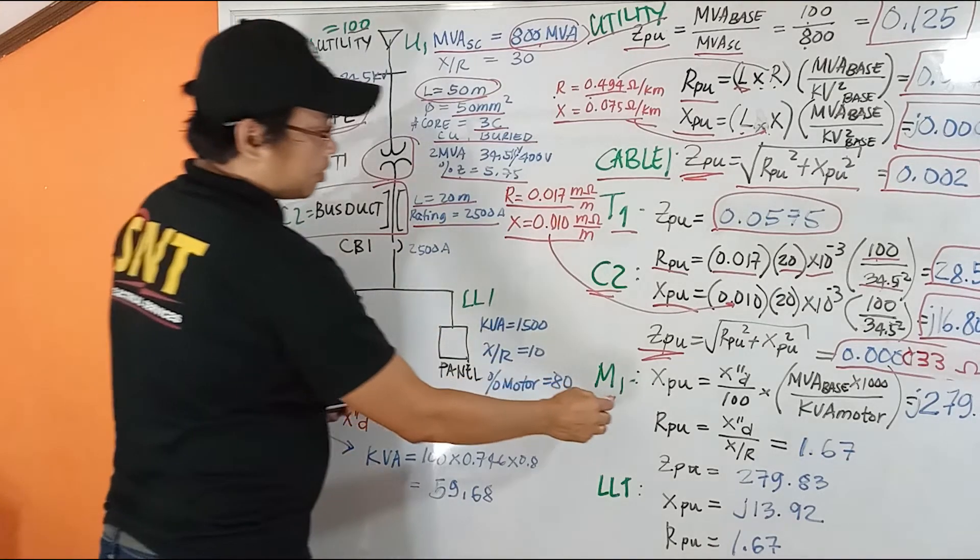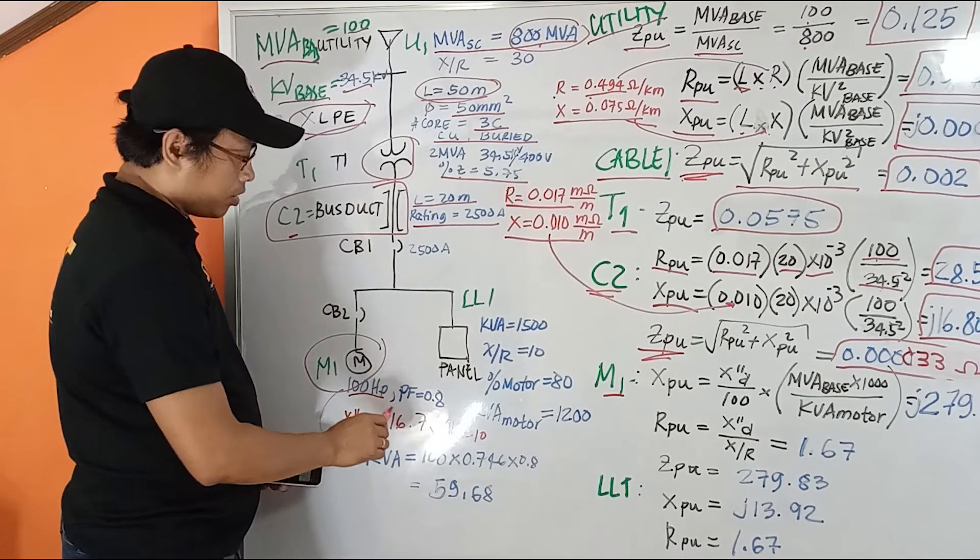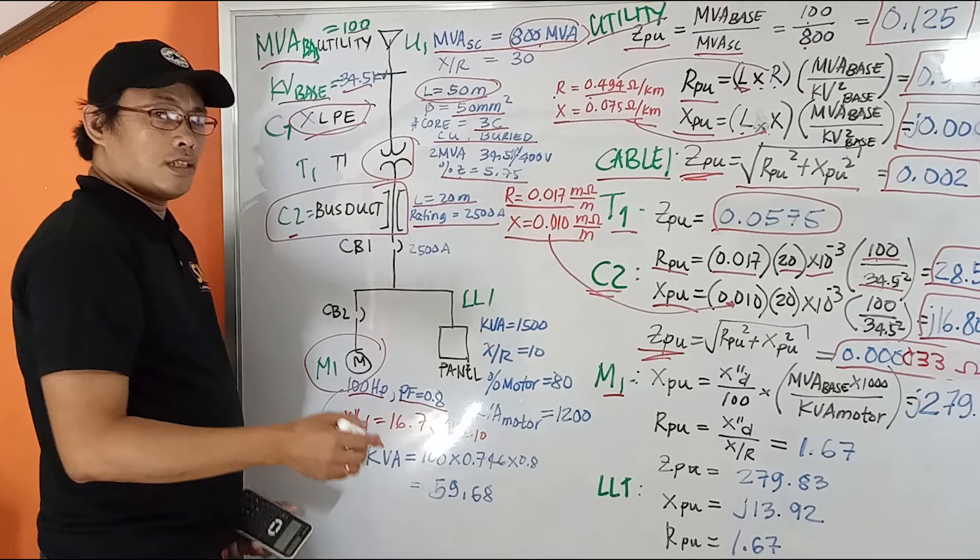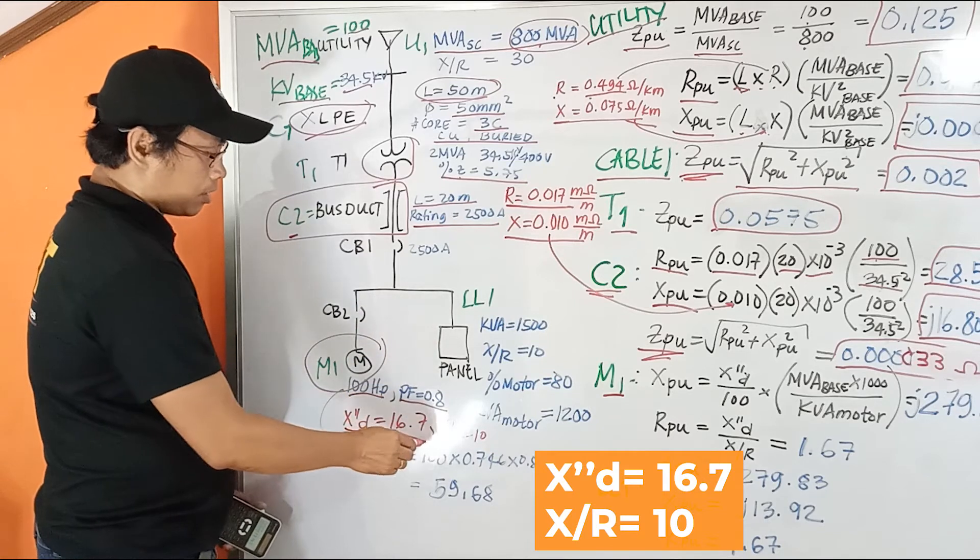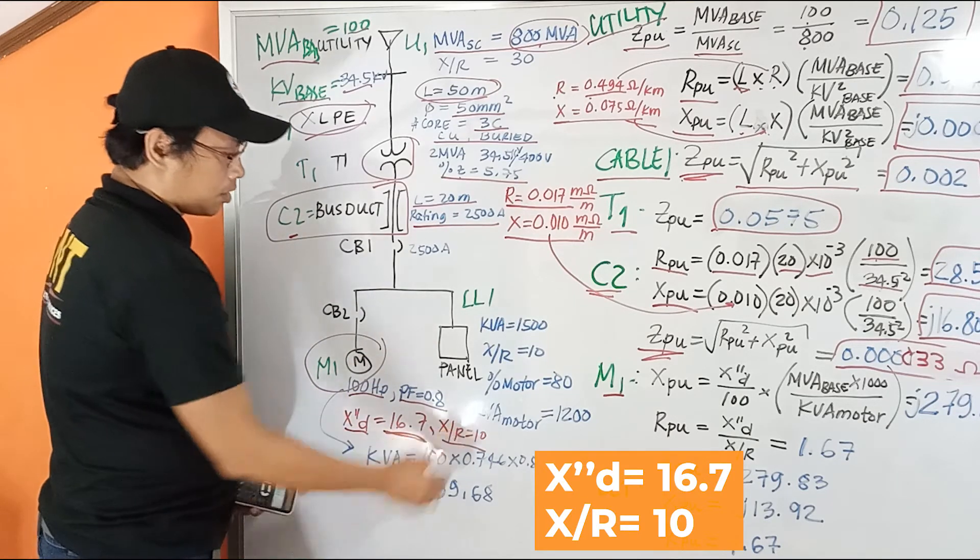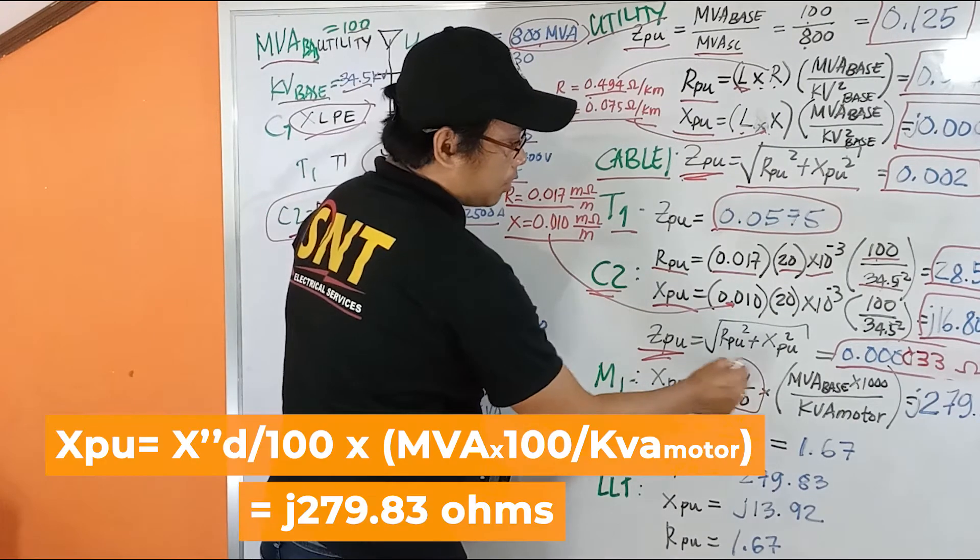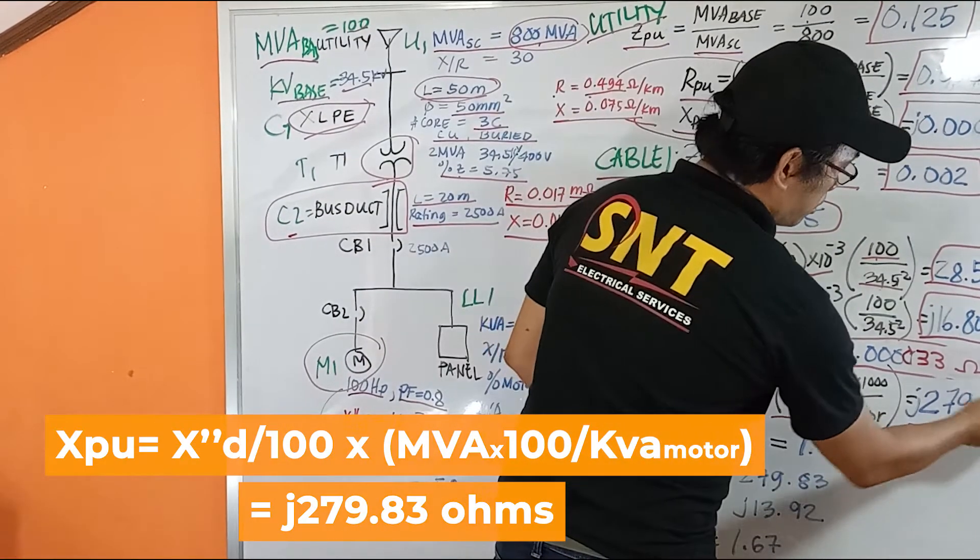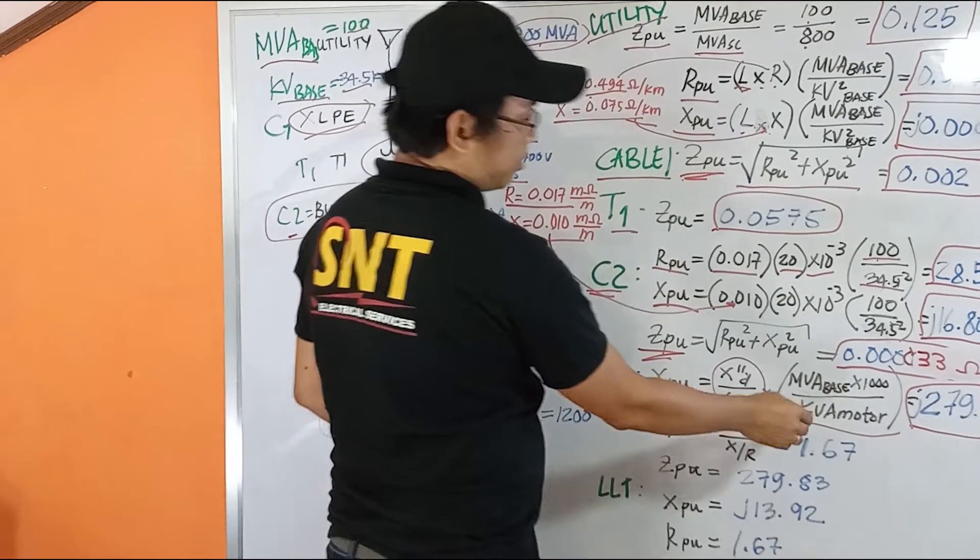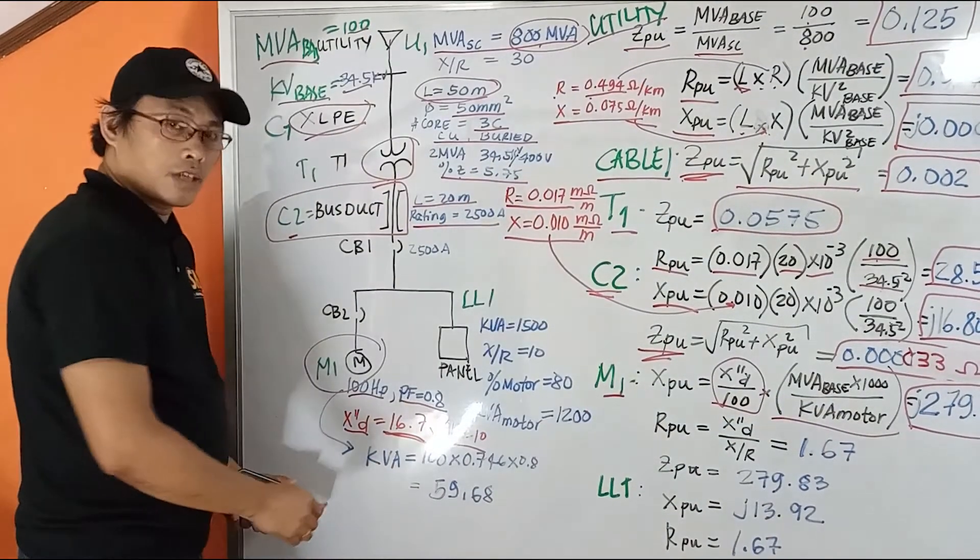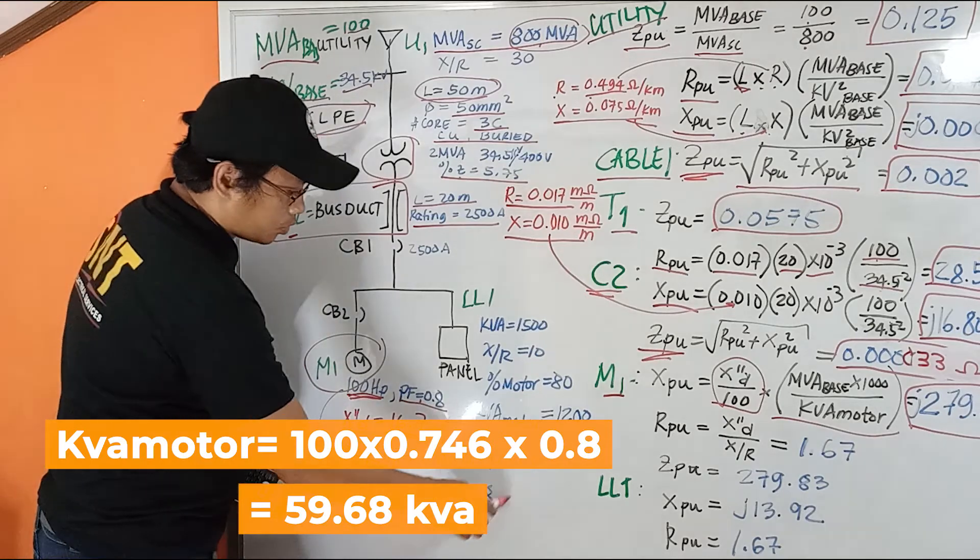Then we calculate our motor M1. Motor M1, given 100 horsepower, power factor of 0.8. Now, upon getting the sub-transient impedance from the table, from the standard, we assume at 16.7, and X over R is 10. So substitute it in the formula here. And our result is this one. 16.7 divided by 100 times MVA base, which is 100 divided by MVA motor. So our calculation is to get the MVA of the motor.